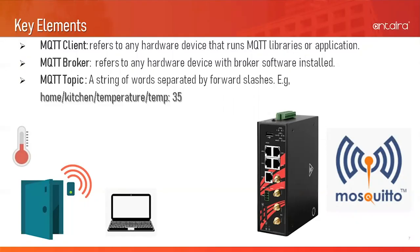The next element is the MQTT broker, which refers to any hardware device with built-in broker software. A perfect example is the Antaira Industrial Cellular Gateway, which has Mosquitto built in. The MQTT broker is responsible for receiving messages from publishers, deciding who is interested based on the topics, and sending messages with the matching topic to subscribers. The last element is the MQTT topic, which refers to a string of words consisting of one or more topic labels separated by a forward slash, similar to the syntax of a website address. For example, a temperature sensor will publish the current temperature value of 35 degrees Celsius to the topic of home/kitchen/temperature, which is sent to the MQTT broker, and the broker forwards the message to any interested client, such as an air conditioner that may turn on or off automatically based on the temperature received.